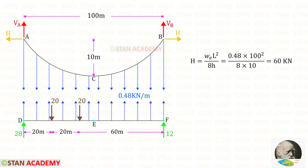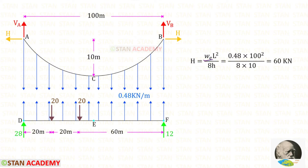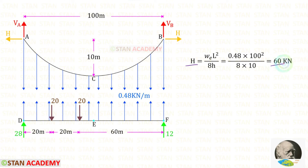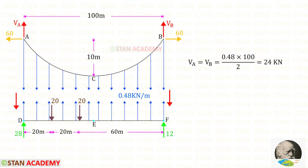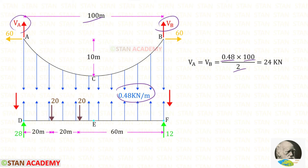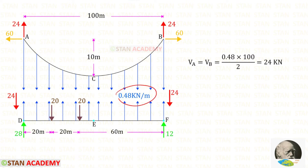Now in the cable let us find the horizontal reaction. The formula is WE × L squared upon 8H. WE is 0.48, L is 100, and H is 10. For H we will get 60 kN. Now in the cable let us find the vertical reactions VA and VP. For that we have to multiply the uniformly distributed load by the distance and then divide by 2. When we do that we will get 24 kN.